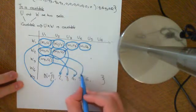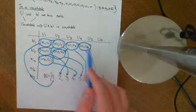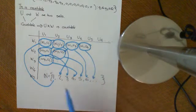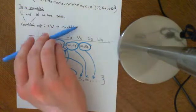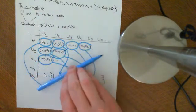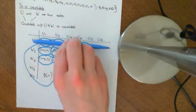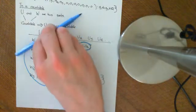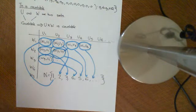Every element of this table will be bijected with some natural number. Every ordered pair in the Cartesian product space will be in some diagonal, and you will eventually reach that diagonal because each diagonal contains only a finite number of elements. You can finish each diagonal, unlike rows or columns which are infinite. So the Cartesian product of two countable sets is countable.